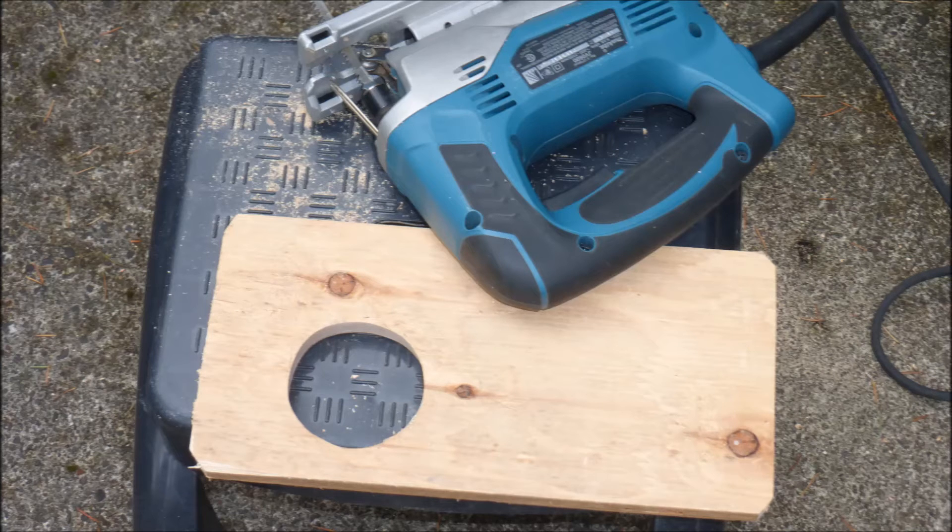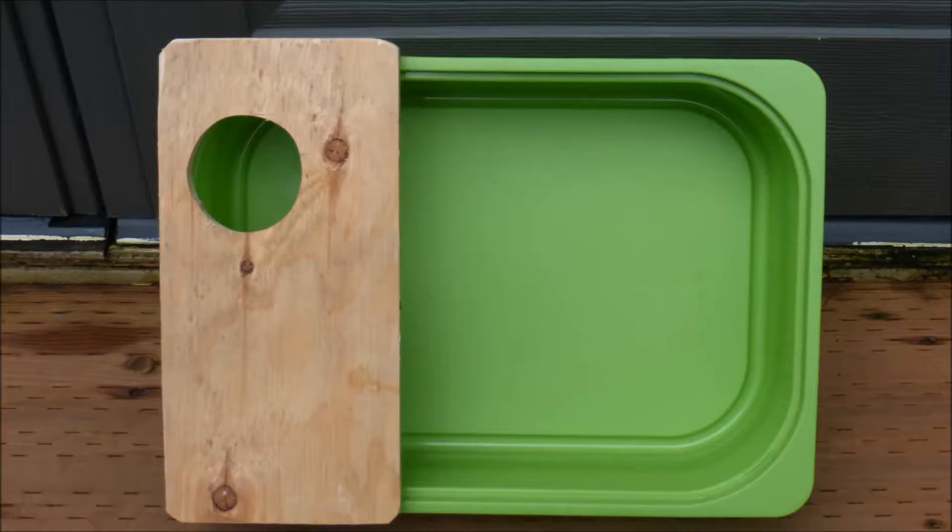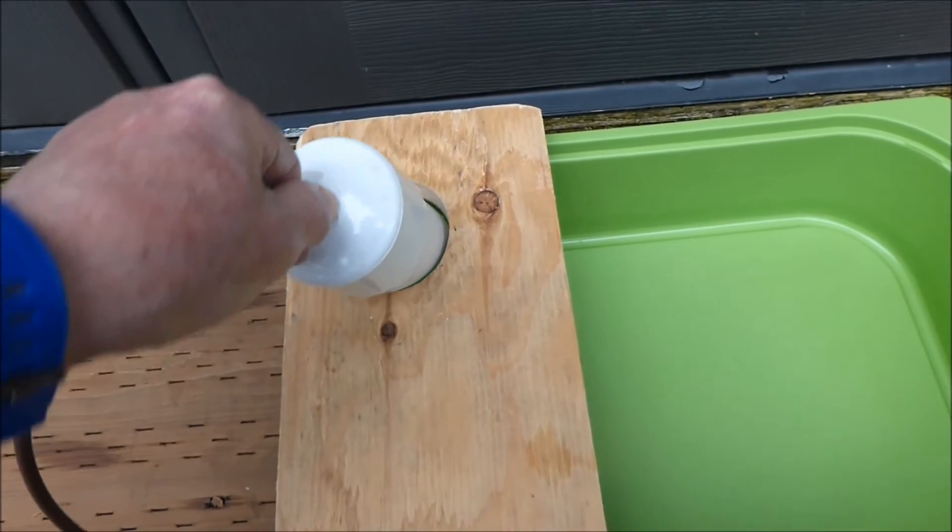A 2 and 3 quarter inch diameter hole is cut into a plywood board. The 6 inch wide plywood board is fastened to the water dish. The float valve is placed in the water dish.